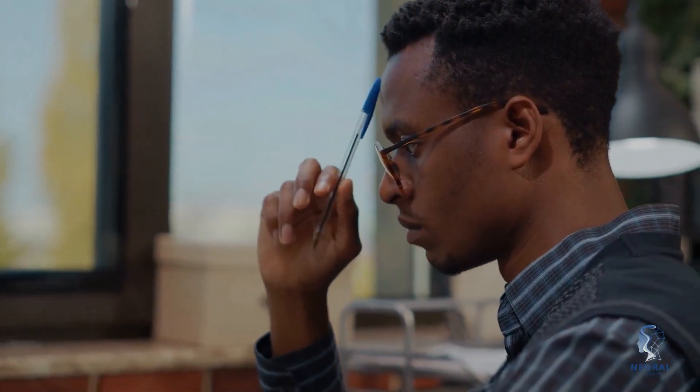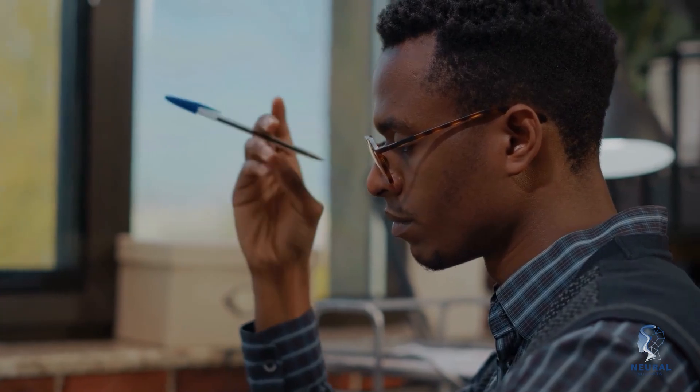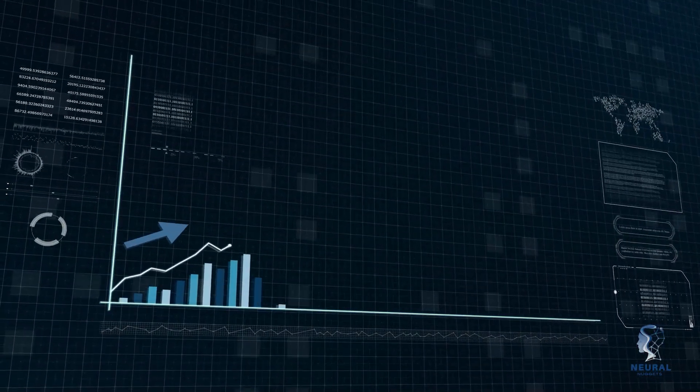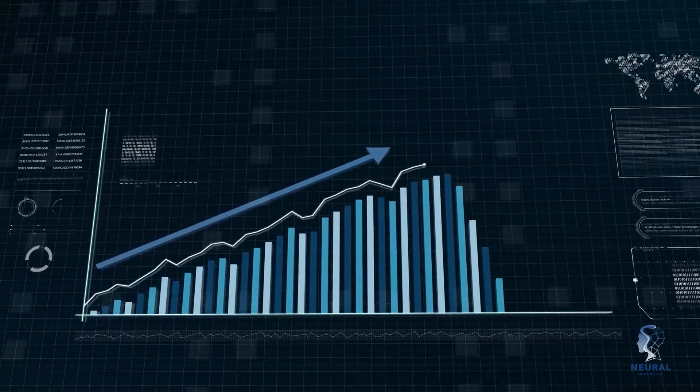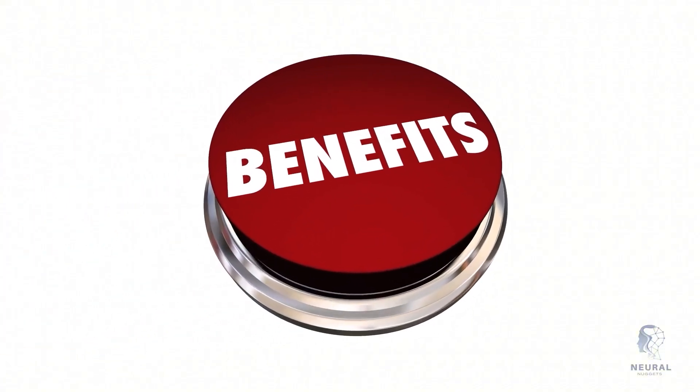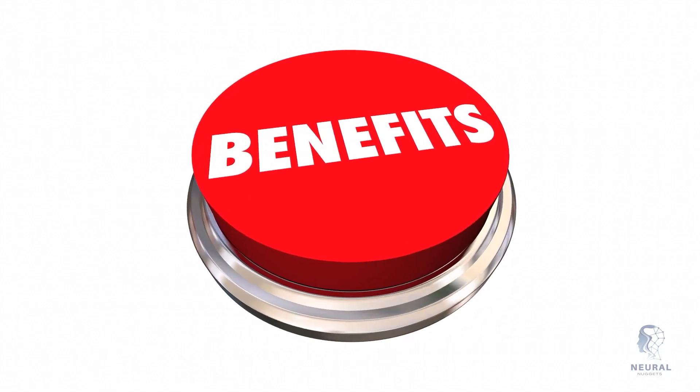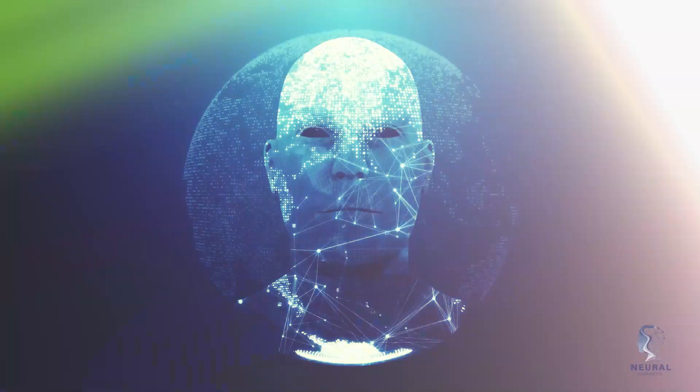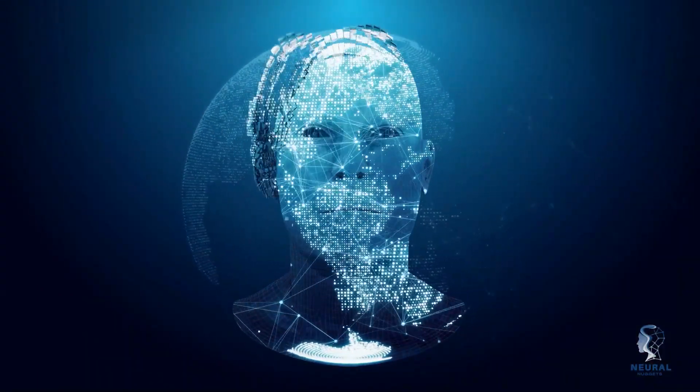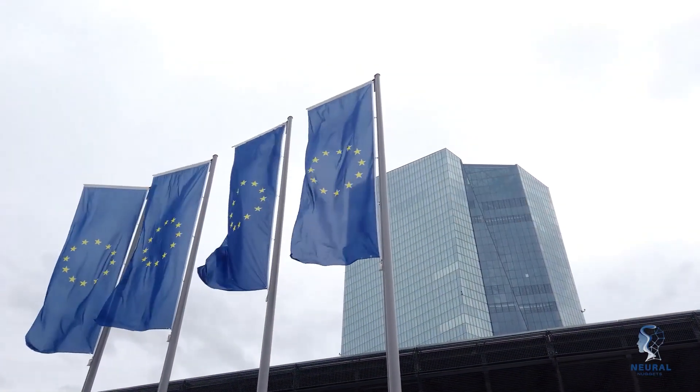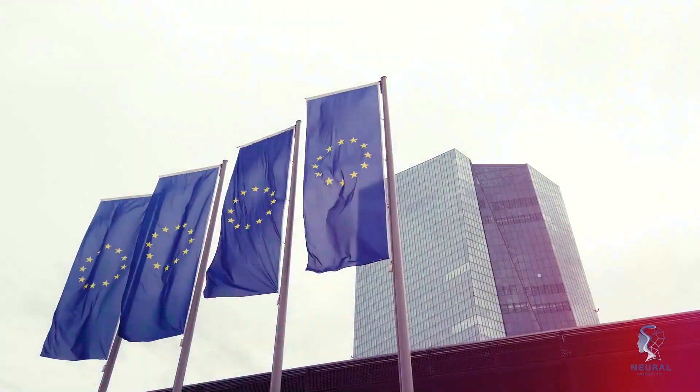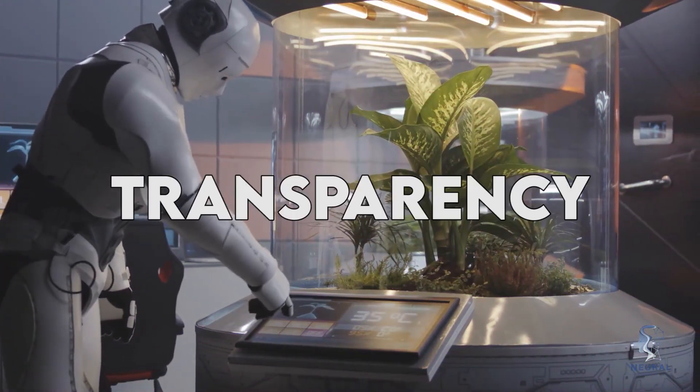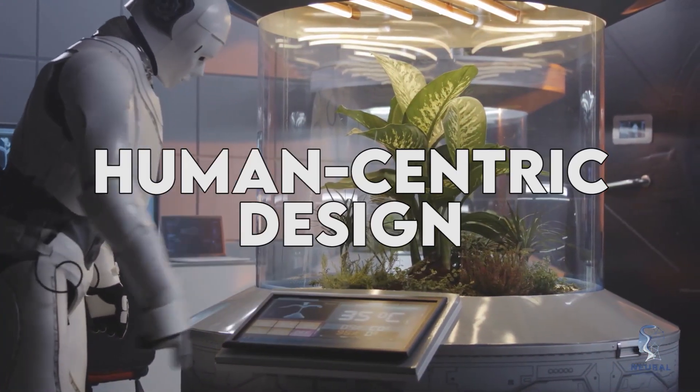Despite these challenges, there is growing recognition that regulation is necessary to ensure that AI is developed and used in a way that benefits everyone. One approach to regulation is to focus on creating ethical guidelines and standards for the development and deployment of AI systems. For example, the European Union has developed a set of ethical guidelines for AI that prioritize transparency, accountability, and human-centric design.